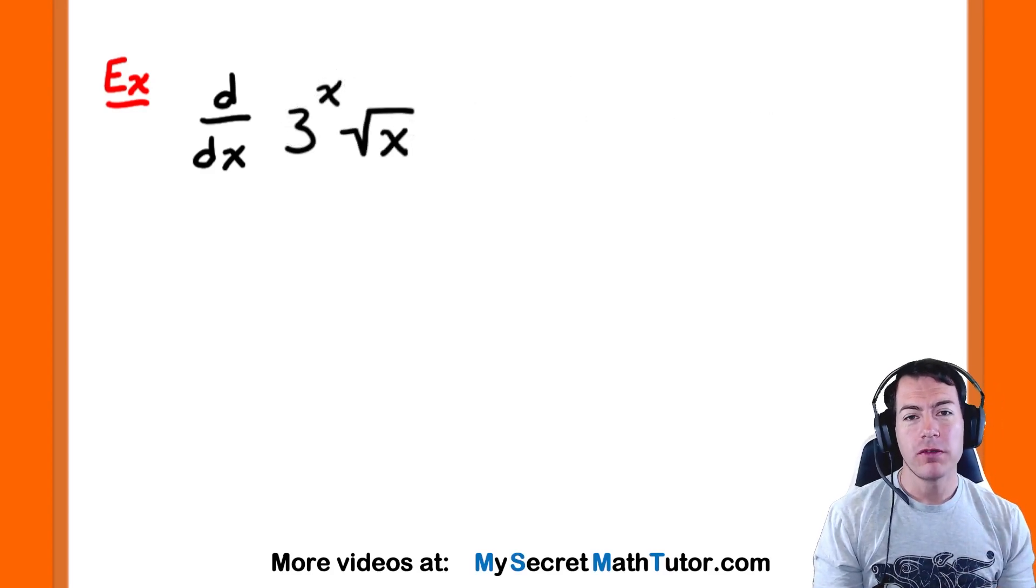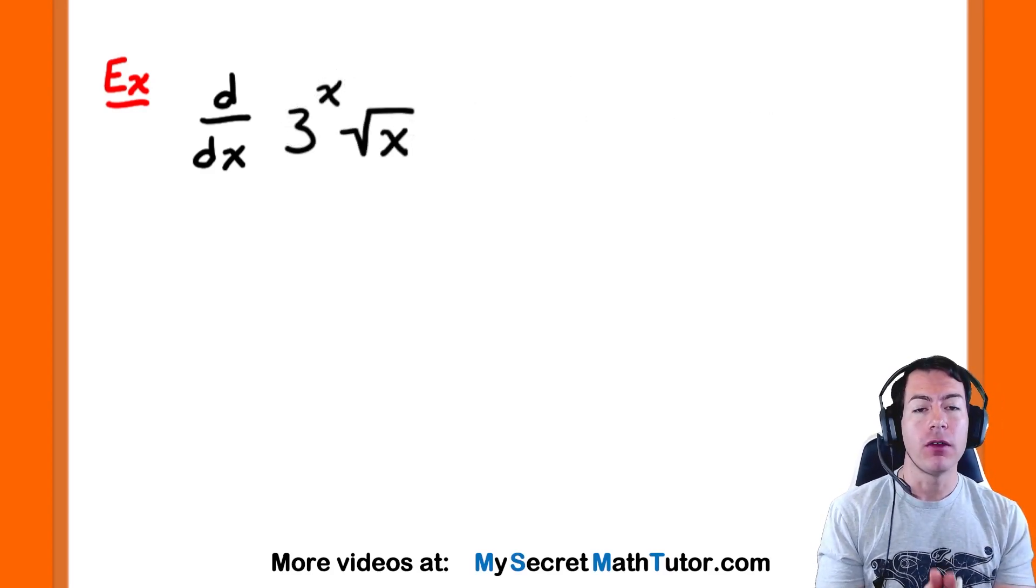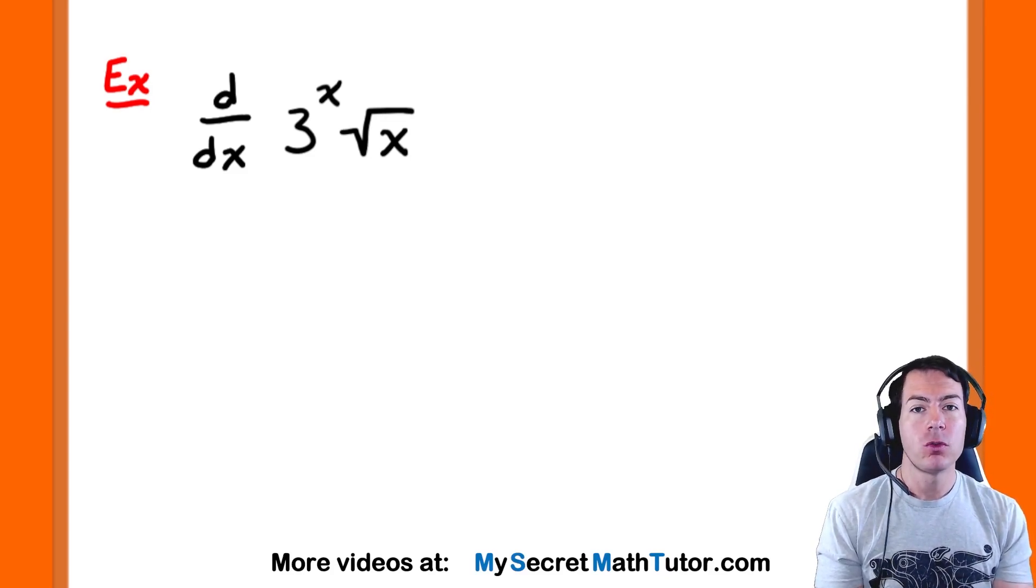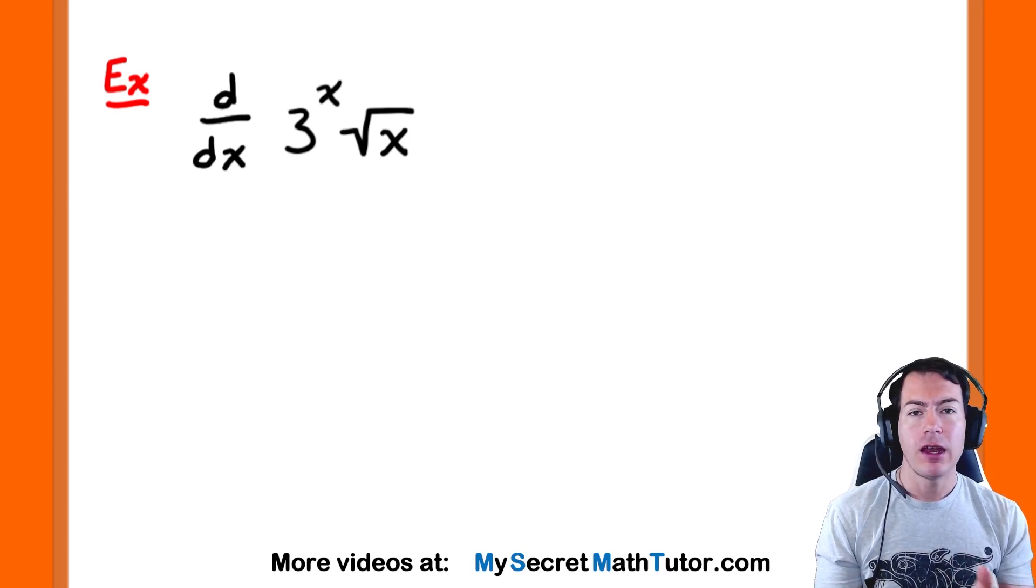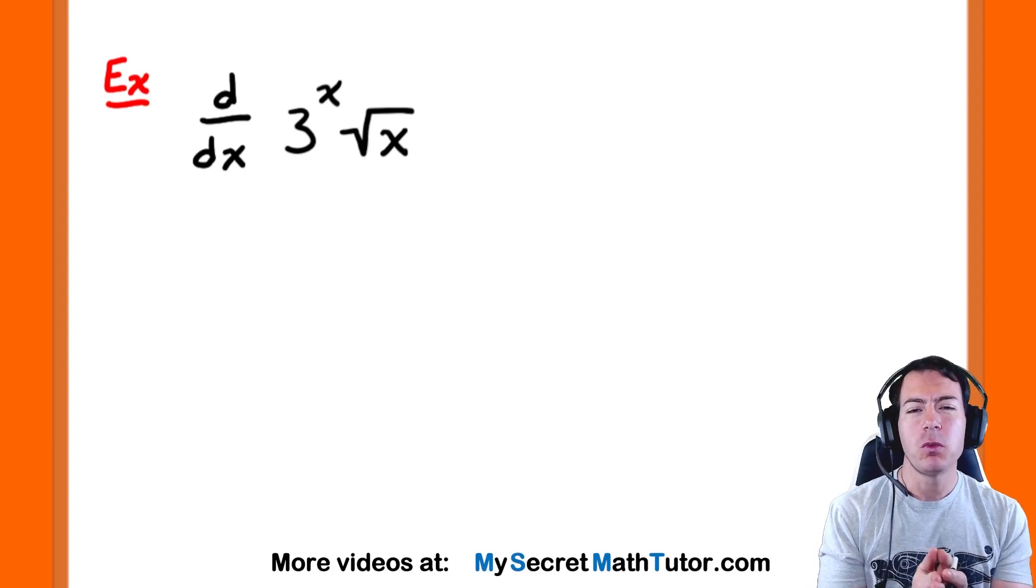Let's do just one more of these for good measure, where we're taking the derivative of 3 to the power of x, all multiplied by the square root of x. In order to do something like this, of course, we will use the product rule. And as we're taking the derivative of some of these individual functions, the derivative of 3 to the power of x will also show up.